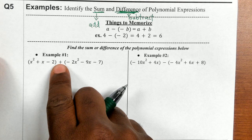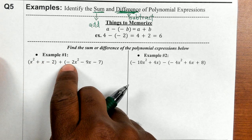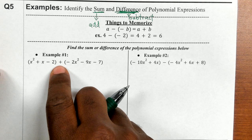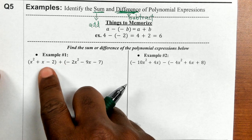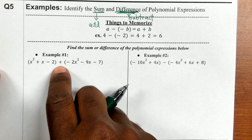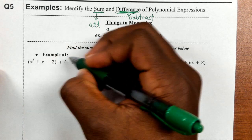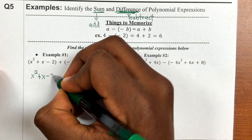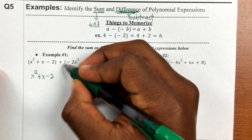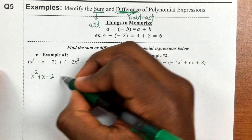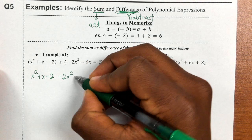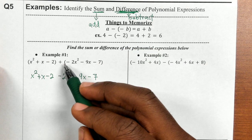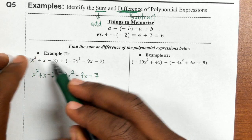Anytime you're adding polynomials together, we can immediately go ahead and remove the parentheses. I'm going to remove the parentheses and I would have x squared plus x minus 2, then minus 2x squared minus 9x minus 7.